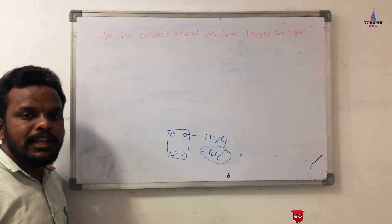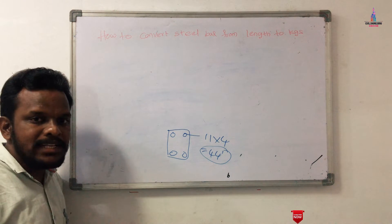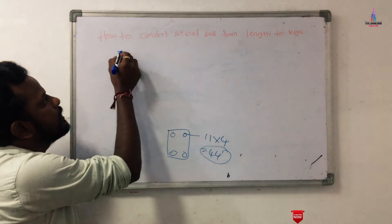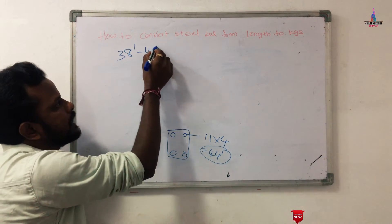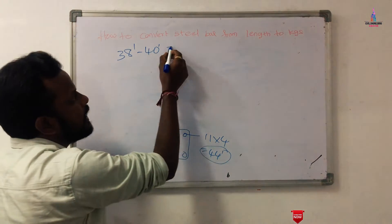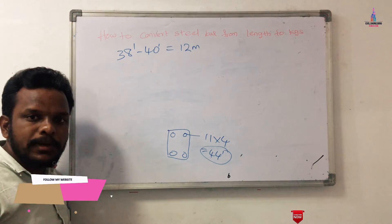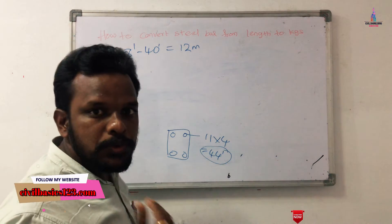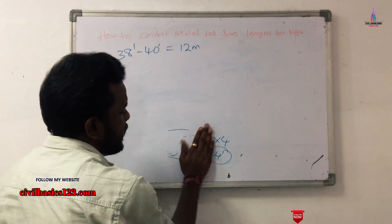In the market, steel bars are available with a single bar length of approximately 38 to 40 feet. If you convert this value, it comes to approximately 12 meters. I will explain how to convert using 12 meters with different diameters.